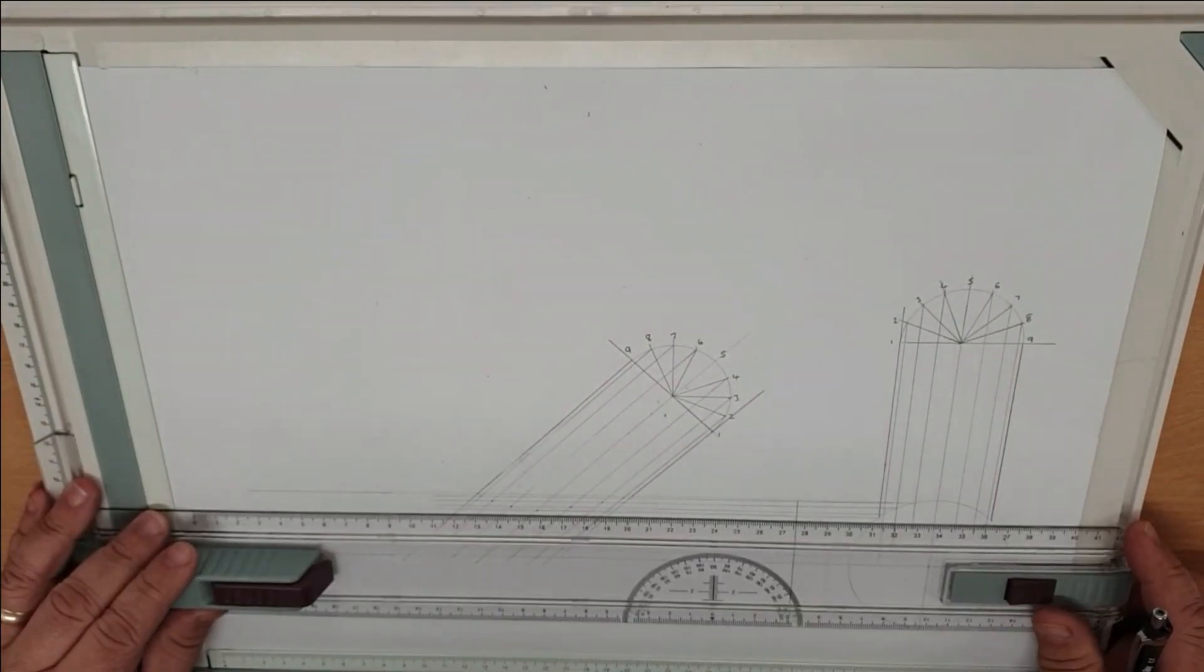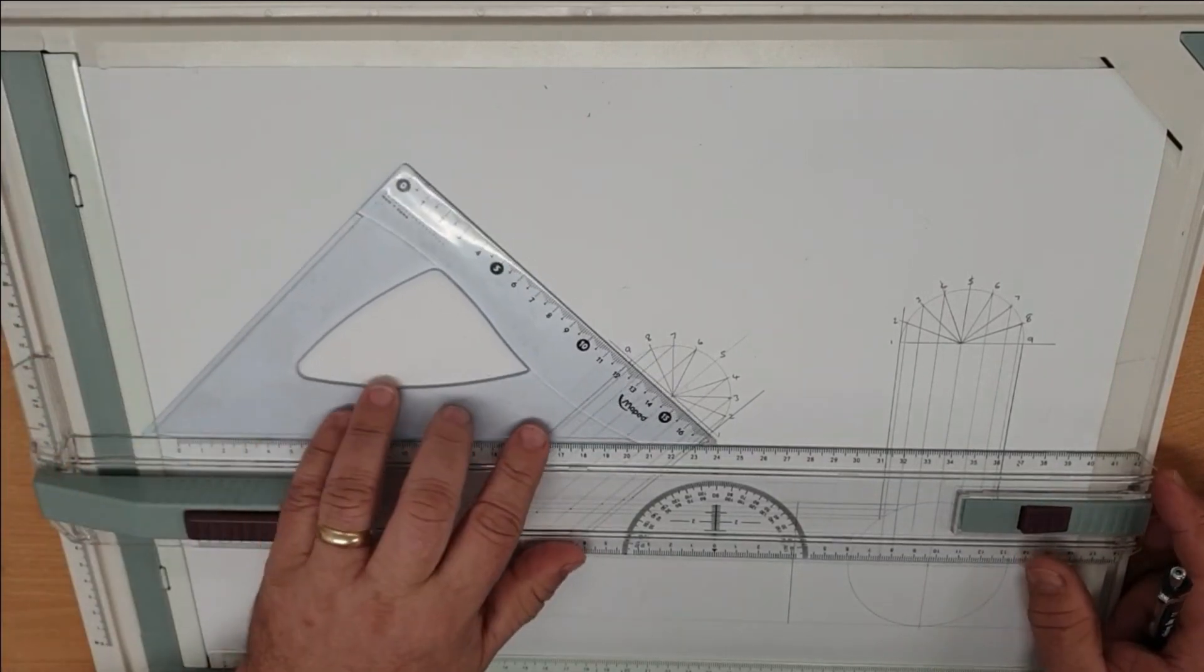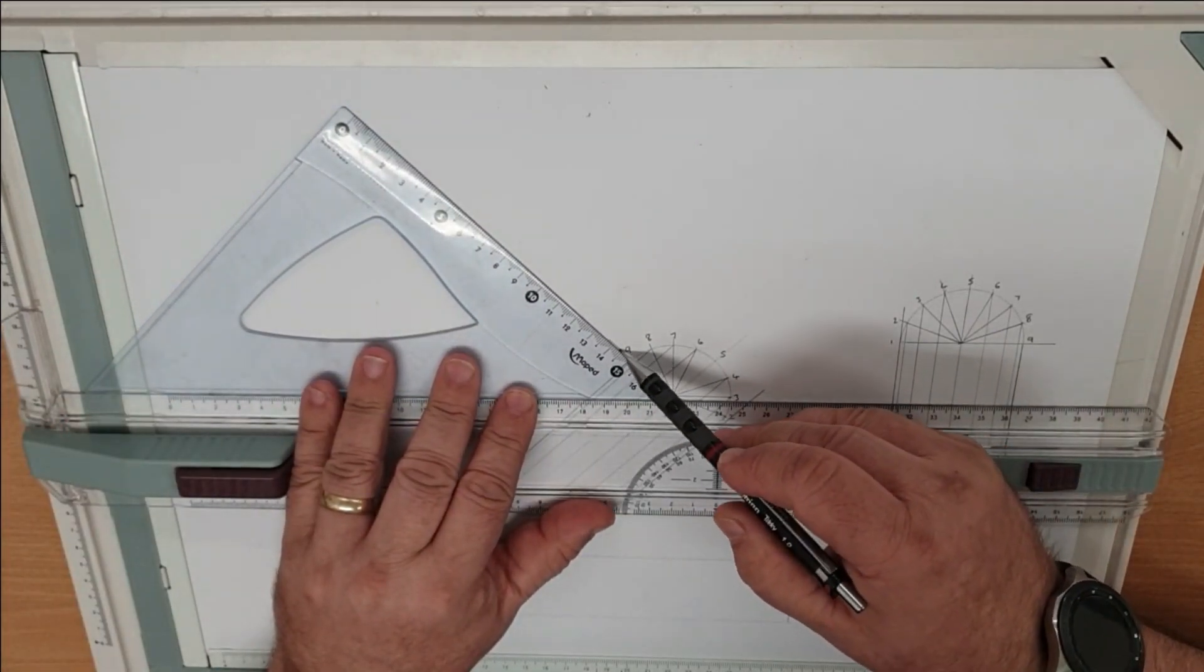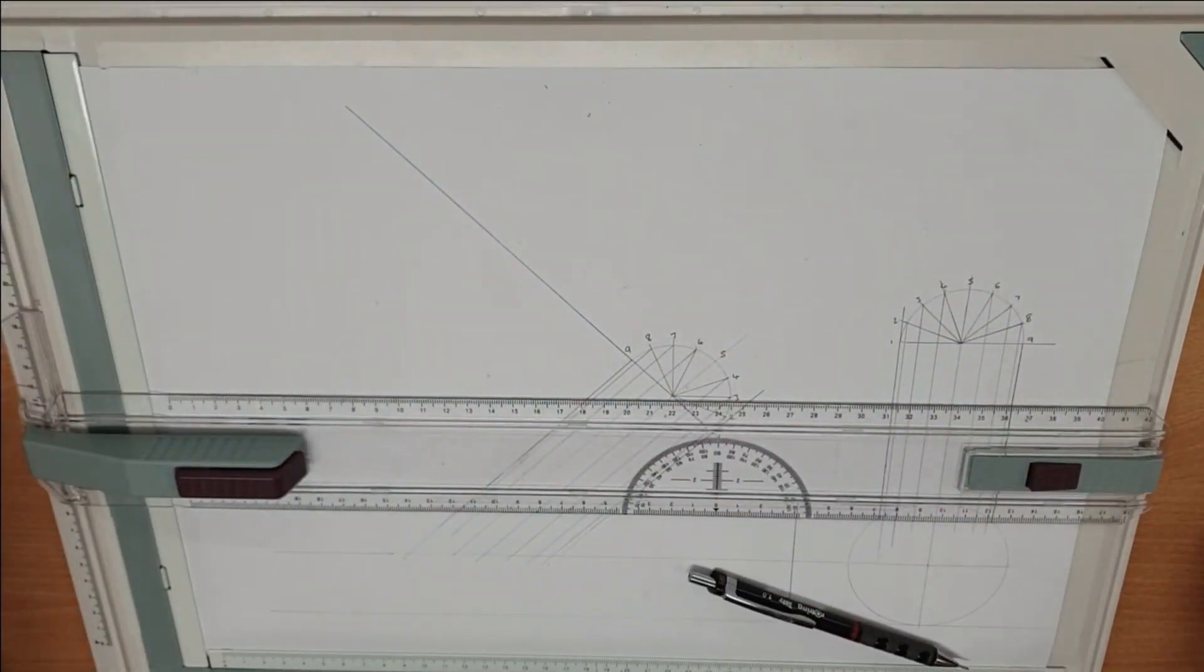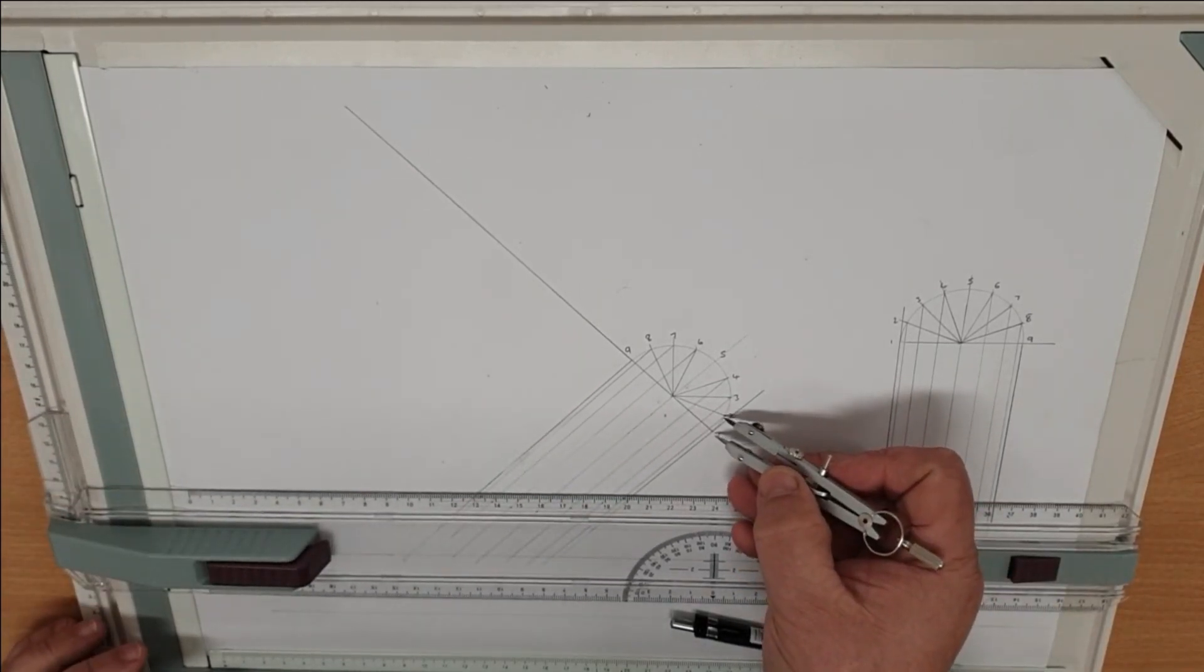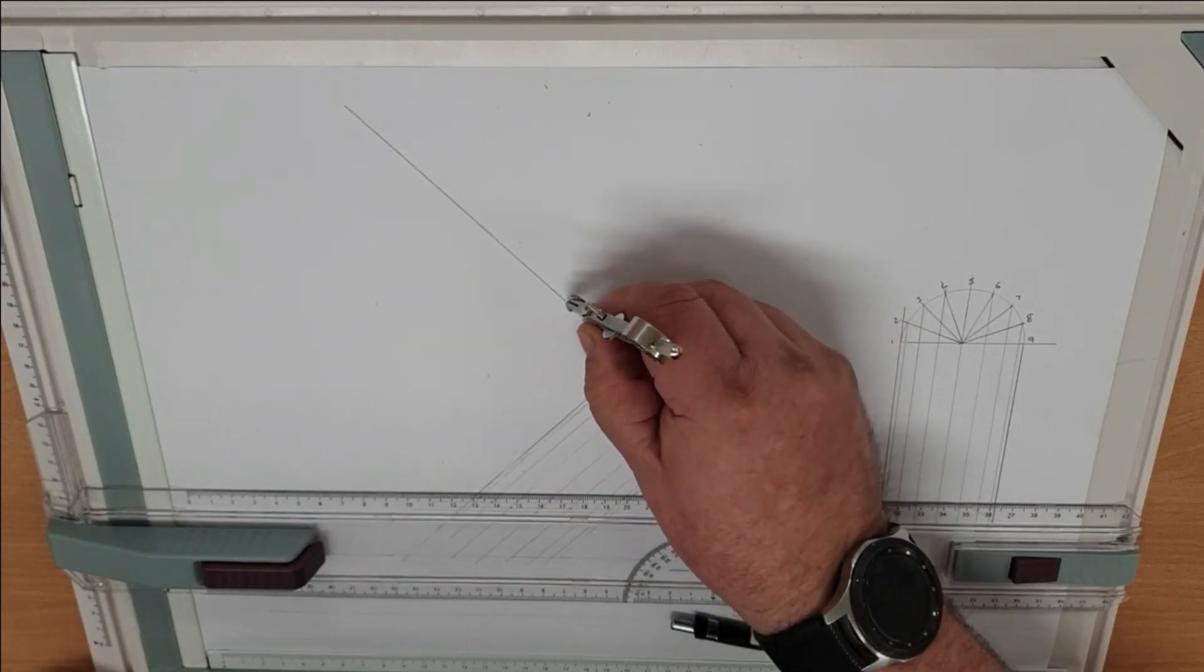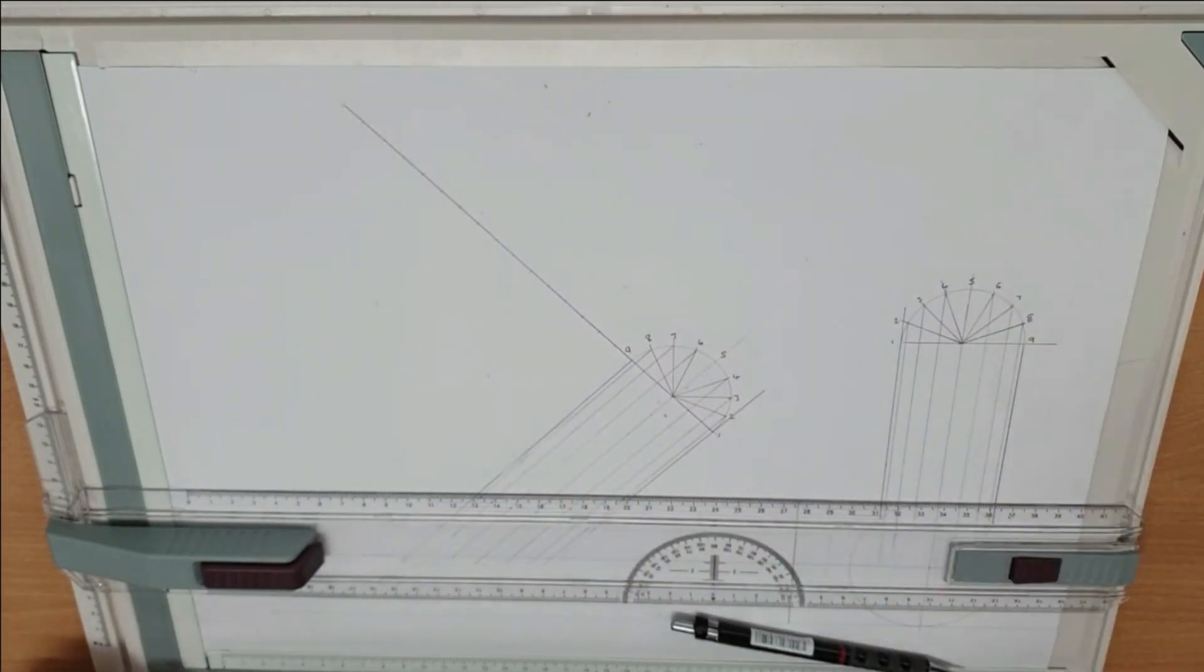So now to draw a pattern to be able to develop that, we're going to use parallel line technique off the side of the 45-degree. Using our increments to plot the length. We're going to use our increments to go one to nine and then back to one.